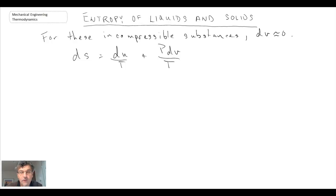Looking at the differential form that we derived from Gibbs' equation, if we assume that these are incompressible substances, the DV term goes away. So the second term from our equation disappears.